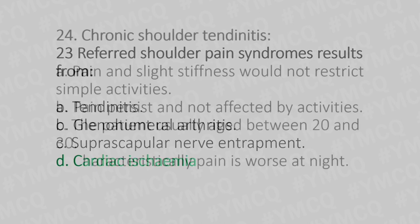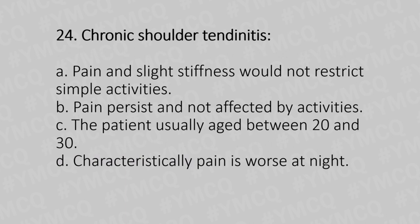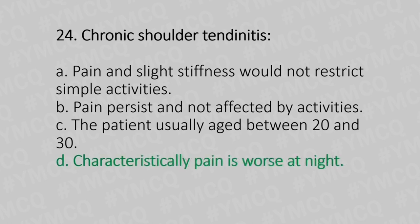Now let's move to question number 24. Chronic shoulder tendinitis. Option A: pain and slight stiffness would not restrict simple activities. Option B: pain persists and is not affected by activities. Option C: pain, the patient is usually aged between 20 to 30. Option D: the pain is worse at night. And the answer is Option D, characteristically the pain is worse at night.